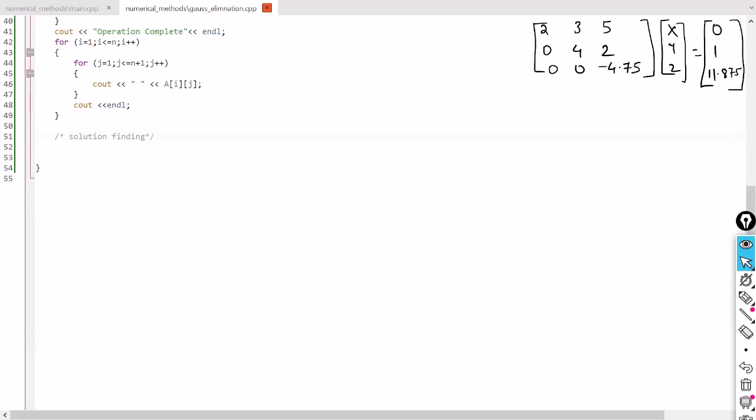Now in the last lecture we found the upper triangular matrix form by doing some operations using the Gauss elimination method. Here we will find the procedure for getting the solution.